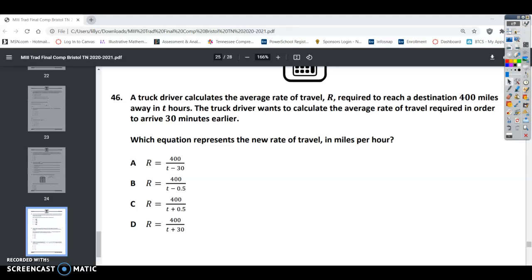Math 3 final benchmark, question 46. A truck driver calculates the average rate of travel R required to reach a destination 400 miles away in T hours. The truck driver wants to calculate the average rate of travel required in order to arrive 30 minutes earlier.